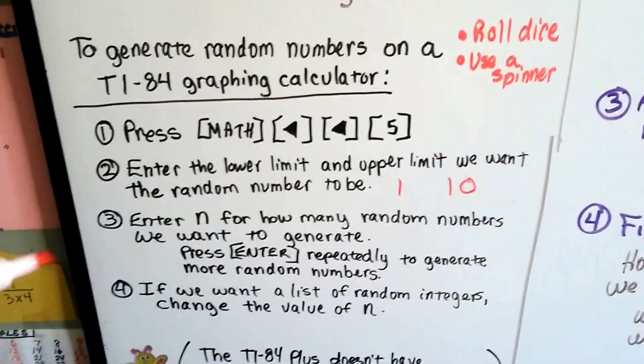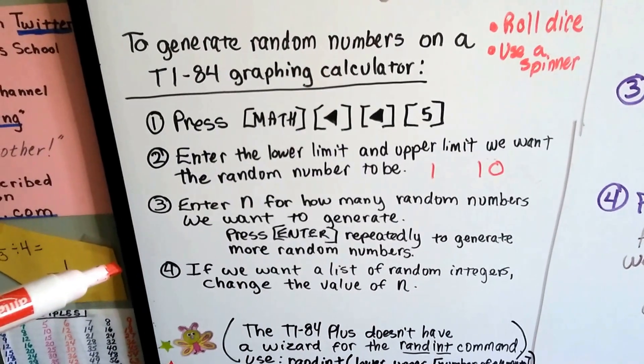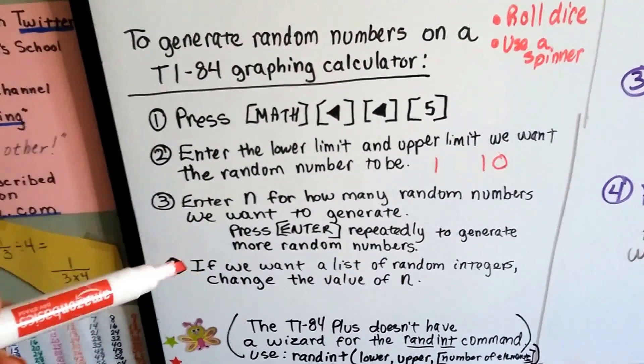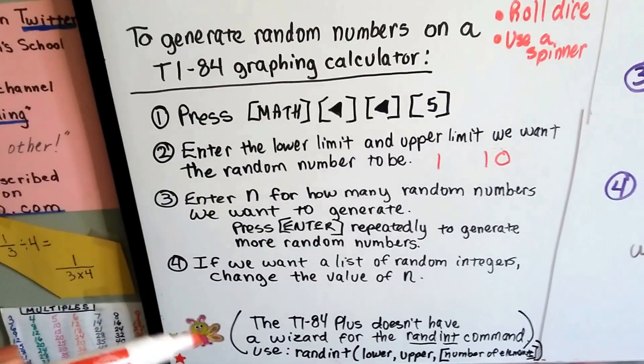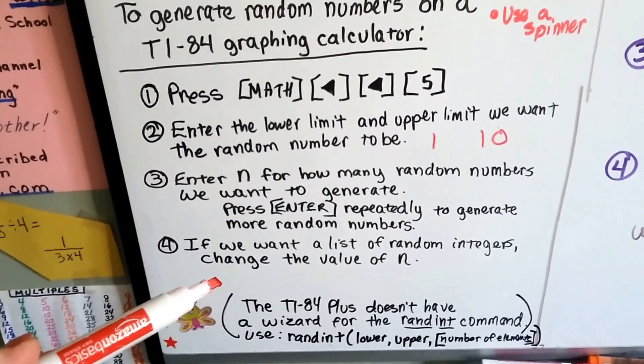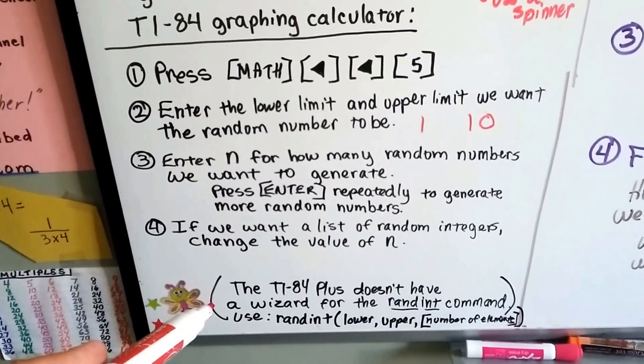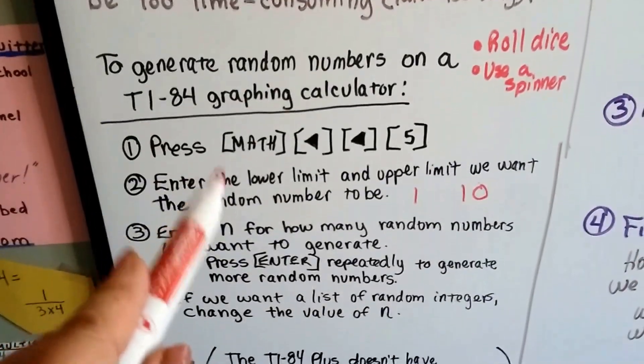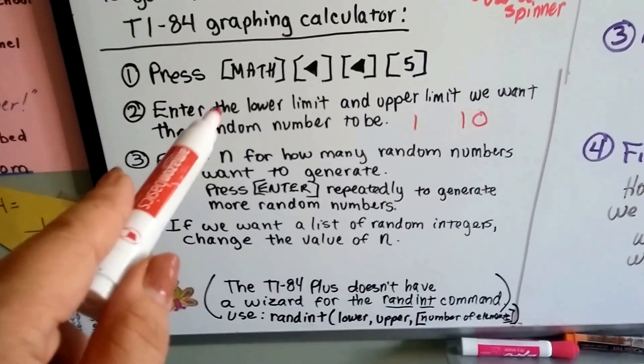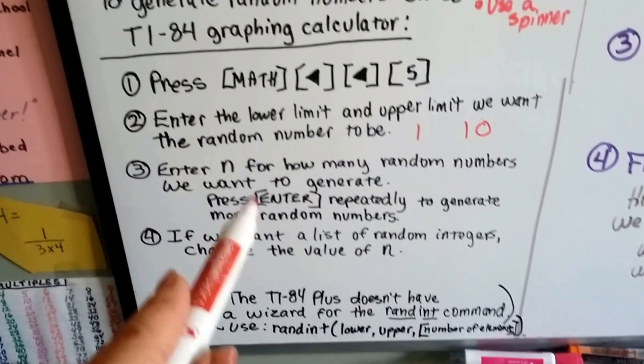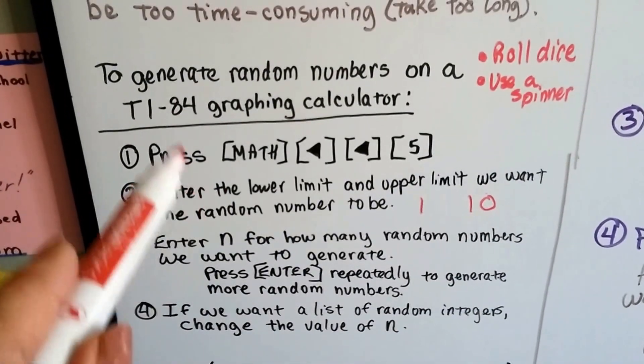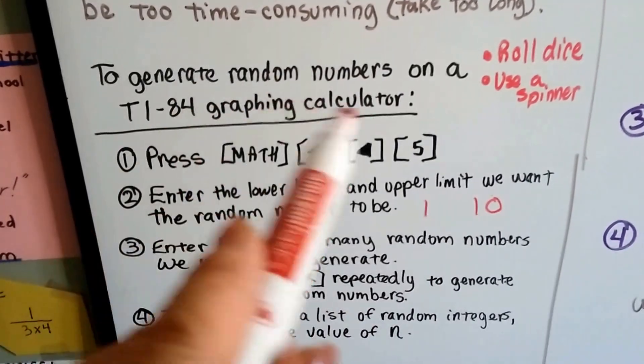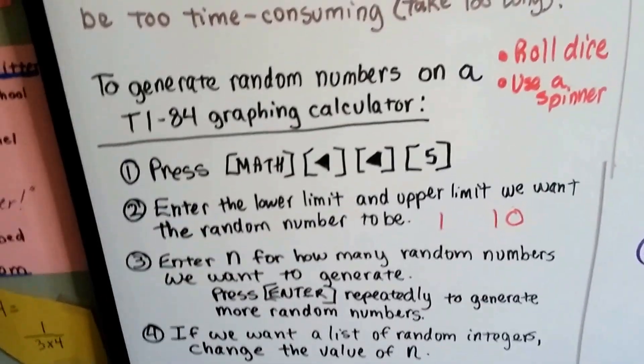You enter N for how many random numbers you want to generate. Press Enter repeatedly to generate more random numbers. If you want a list of random integers, you just change the value of N. Now, I read online that the TI-84 Plus calculator doesn't have this wizard for the random integers, the randint. So you can go online and look how to generate random numbers on a graphing calculator, and this should come up.